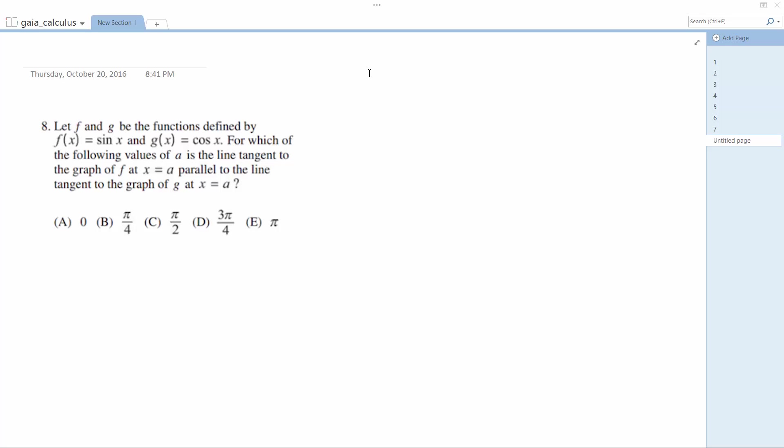We want to find the line that's tangent to the graph of f at x equals a, parallel to the tangent of the graph of g at x equals a.